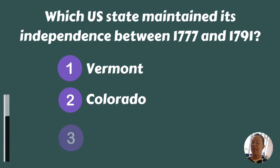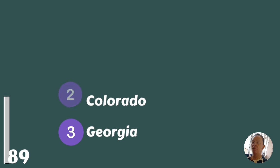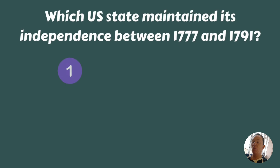Which US state maintained its independence between 1777 and 1791 — Vermont, Colorado, or Georgia? Vermont.